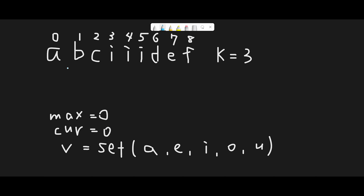Let me explain with this example. The input string is given and k equals 3. To solve this question, we use a sliding window technique. We initialize a few variables: max_vowels and current_vowels, both initialized to zero. I also create a vowels set with a, e, i, o, u. In Python, a set is implemented by a hash table so we can look up data with constant time O(1) on average.